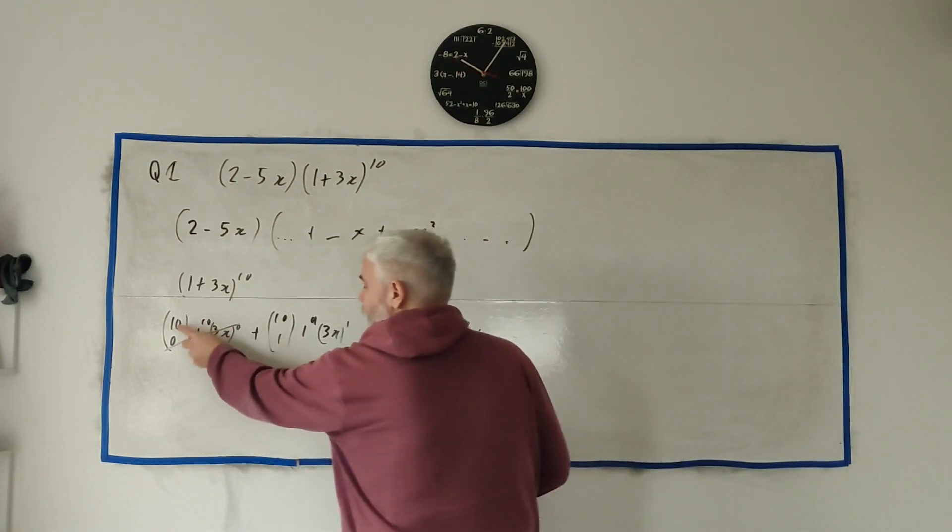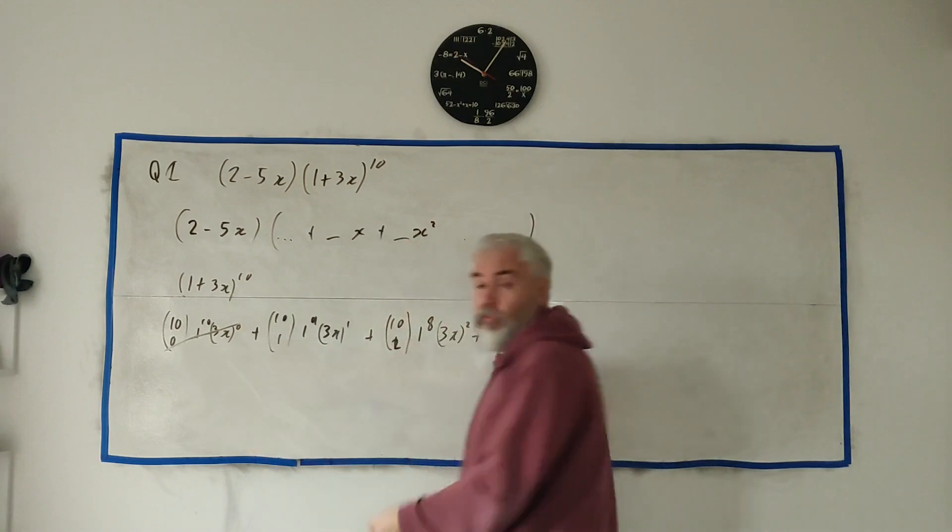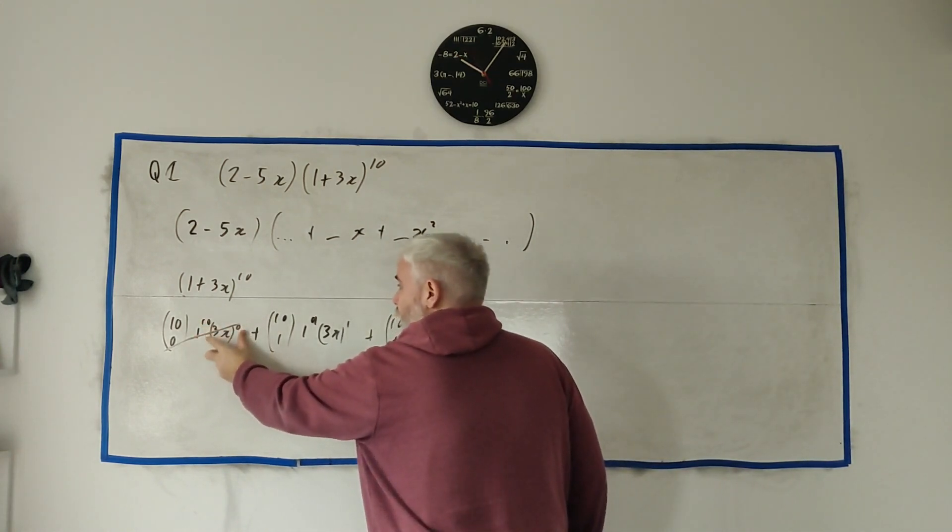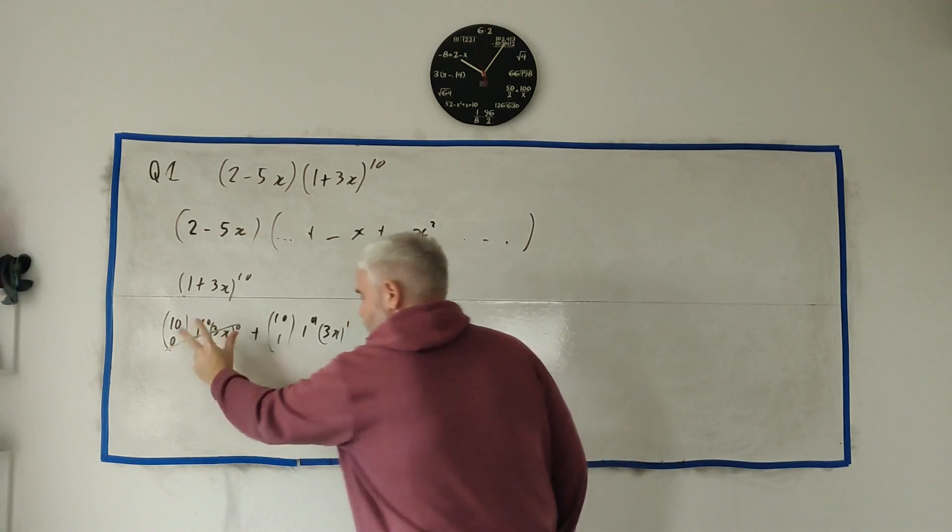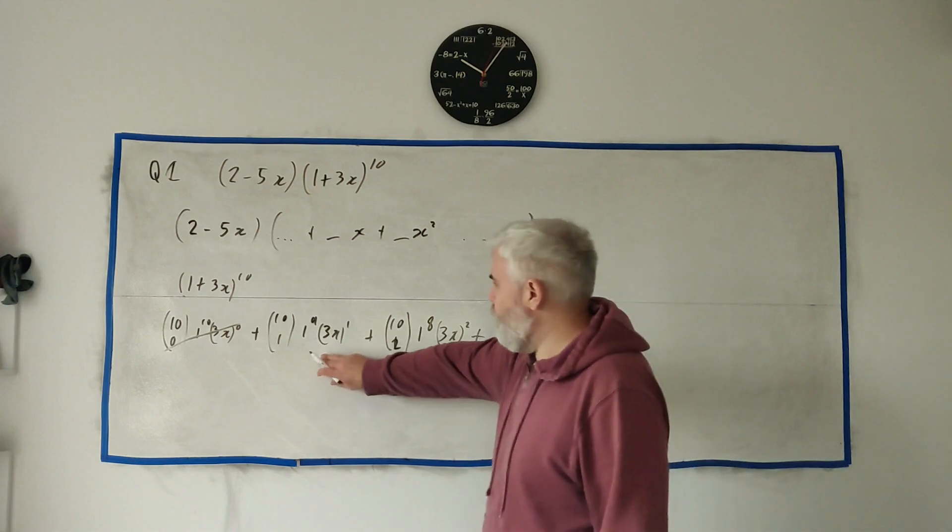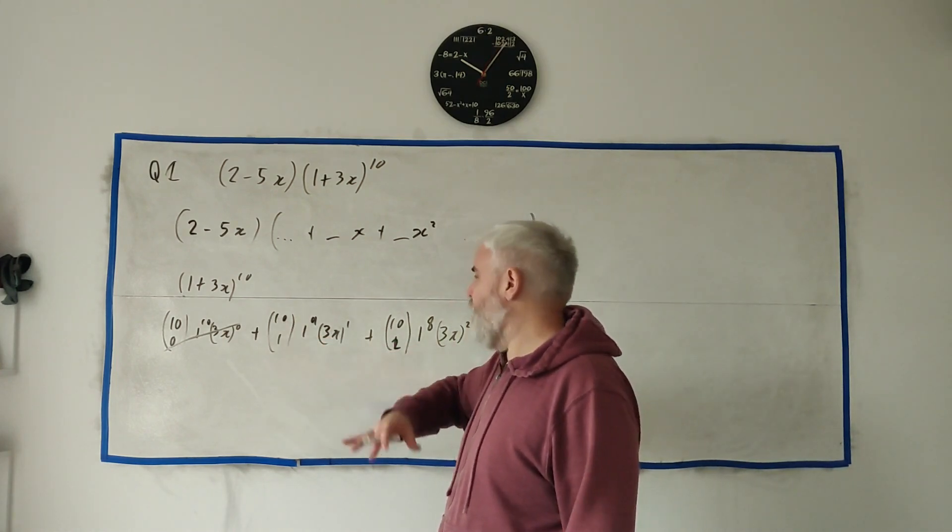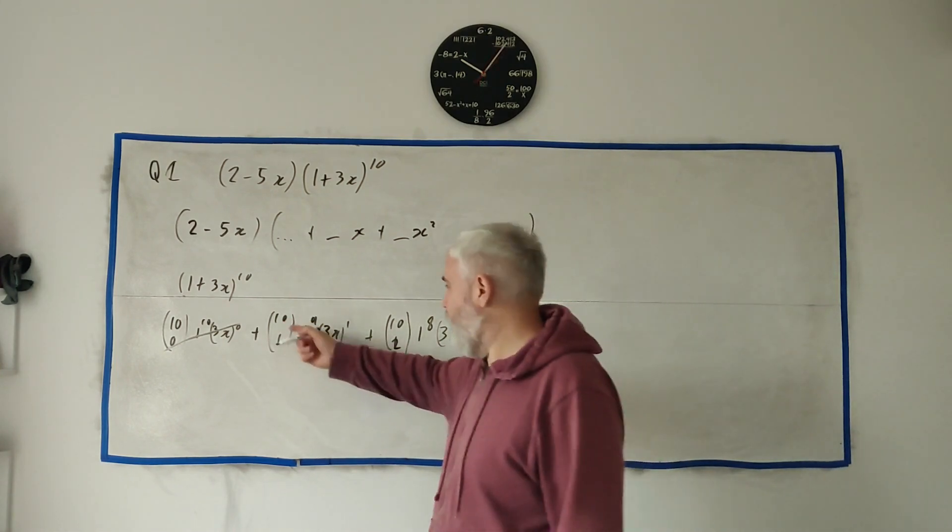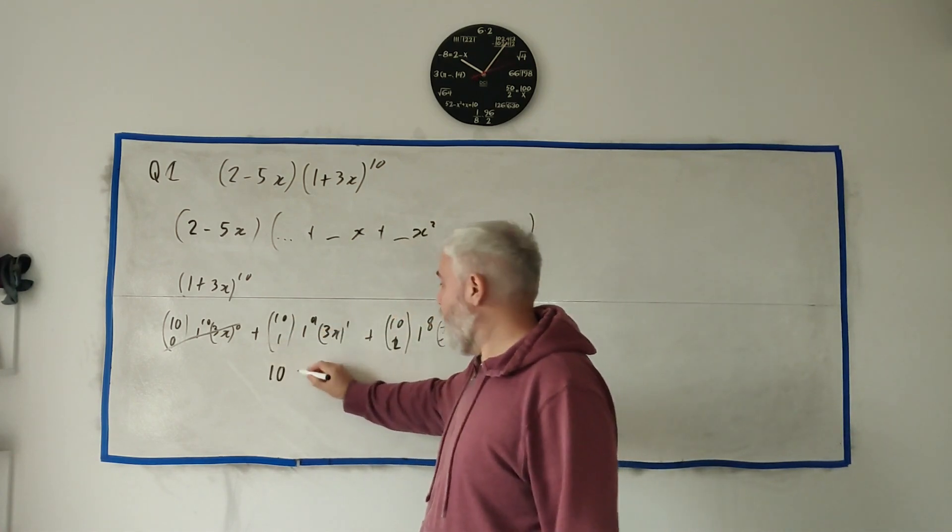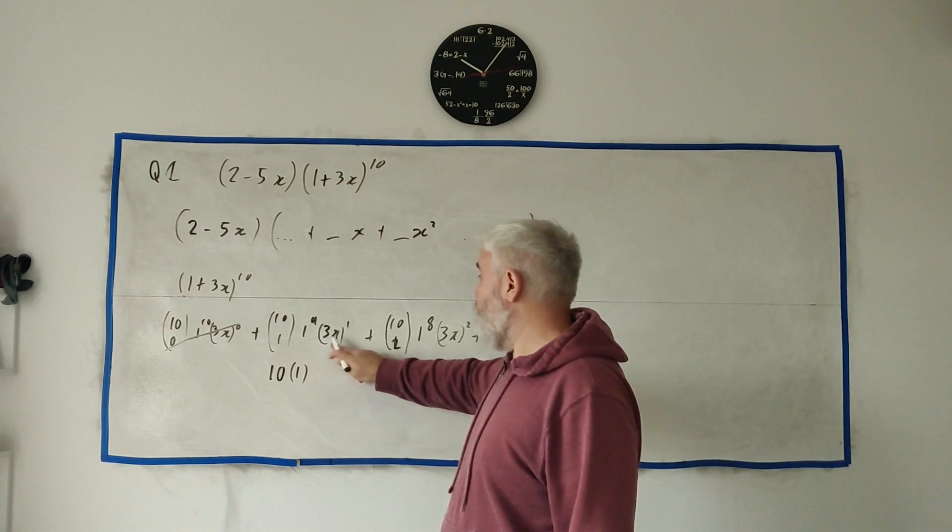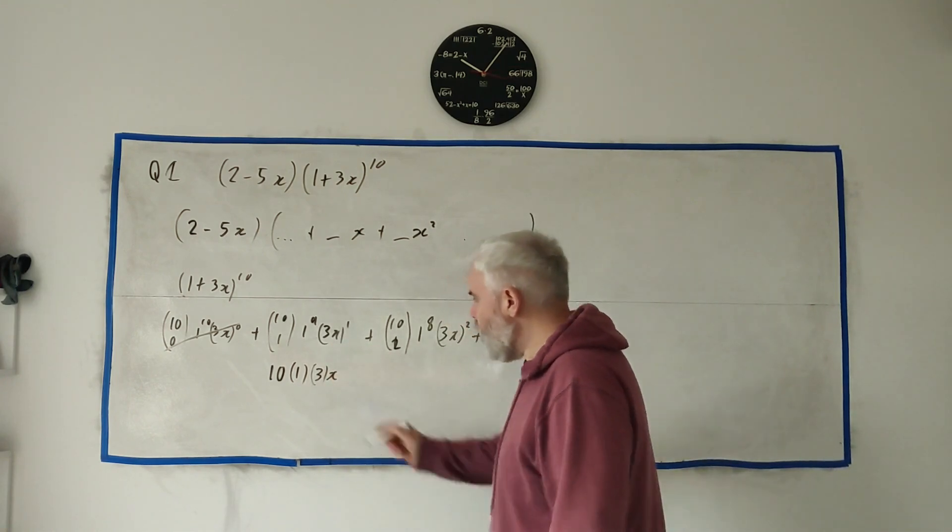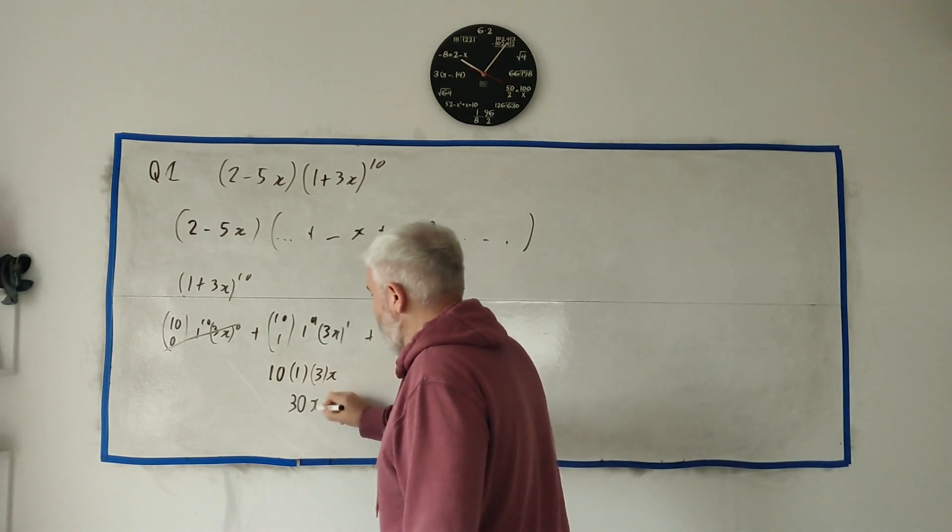In fact I wasn't even interested in this first one here, which we can do in our head. Anything choose 0 is just 1, and 1 to the power of anything is just 1, and something to the power of 0 is just 1. This term is just 1. But again, we're not actually interested in it. And this term we're interested in: 10 choose 1, you can put it in your calculator, but anything choose 1 is the something you've started with, so that's 10. 1 to the power of 9 is 1. 3x to the power of 1 is 3 times x, so that becomes 30x.